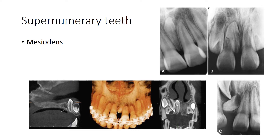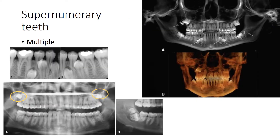Mesiodense also causes midline diastema, as you can see in image B, which can be a concern for aesthetics. When we're talking about multiple supernumerary teeth, it could be associated with a syndrome or non-syndromic as well. These are examples of multiple premolars or multiple molar-looking supernumerary teeth.